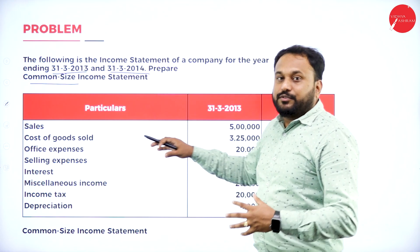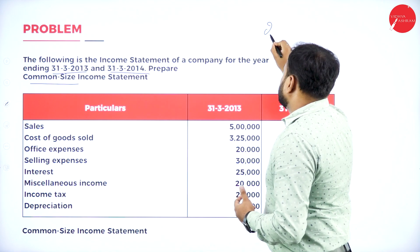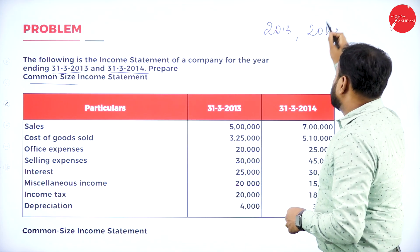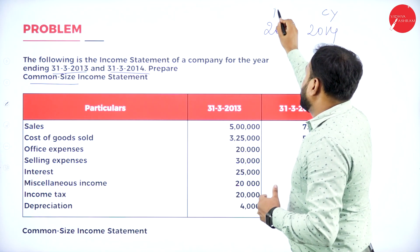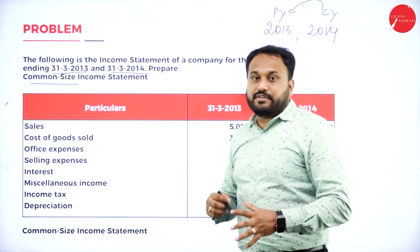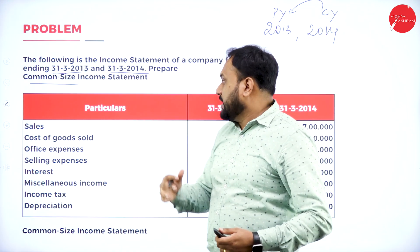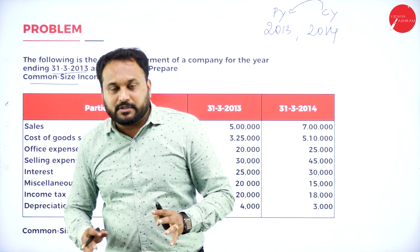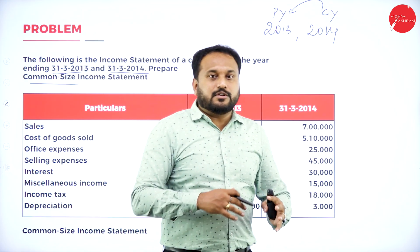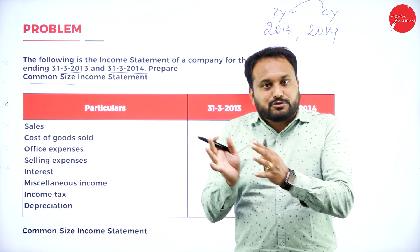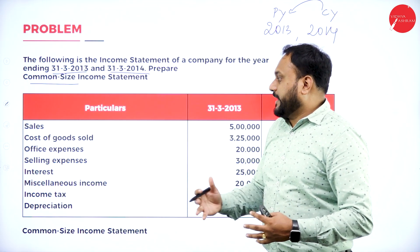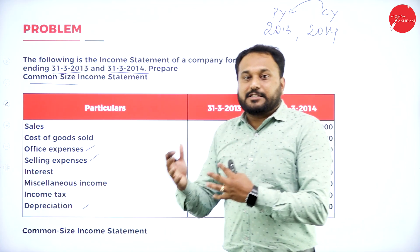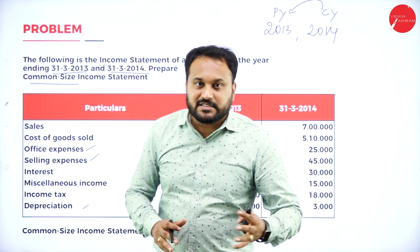When you go with the income statement, you have 2013 and 2014. The current year is 2014 and the previous year is 2013. The format is very simple: sales minus cost of goods sold equals gross profit. After that, deduct all operating expenses — office expenses, selling expenses, and depreciation are operating expenses. After that, go with non-operating expenses.